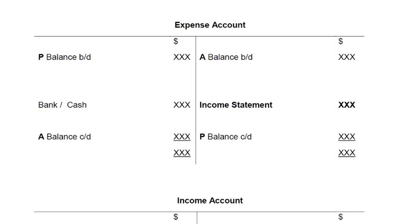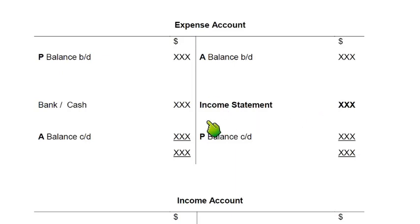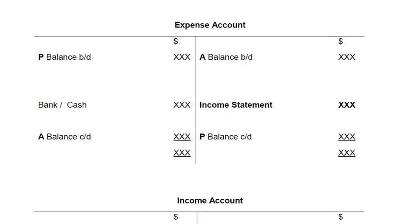If it is not mentioned in the question that rent was paid by check or cash, we always write bank. But if the question specifically tells us the expense was paid through cash, we write cash. At the year end, all expense accounts are closed and transferred to the income statement — we debit the income statement and credit the expense account. The balance CD always becomes balance BD. This balance CD for accrued comes on the credit side.